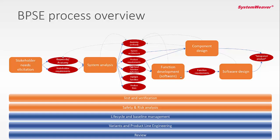Once the system analysis is done, we move to function development. This is where you define your requirements on the software part more clearly and even more crisply. It's also a place where you can do analysis of how the function behaves — use cases, state machines, and things that describe the functionality and give you an understanding of what requirements to place on your software design. Both on the system analysis level and the function level you could see it as design, but it's not really design yet — it's a way to move gradually towards a software design.